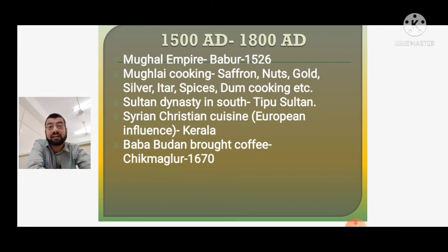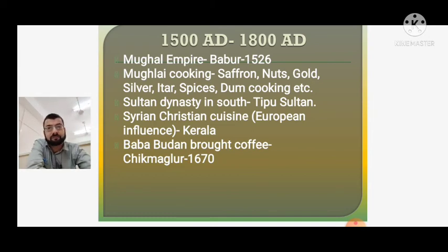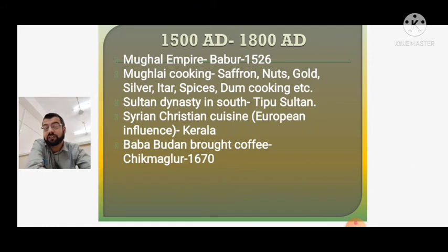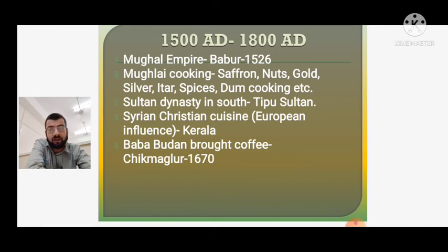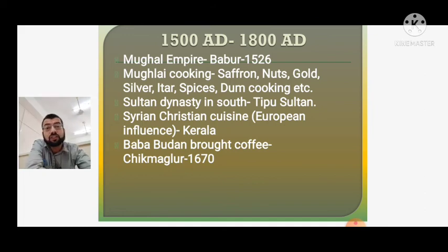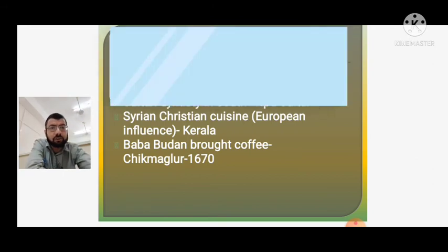At the same time, there was the Sultan dynasty in the southern part of India, whose most famous ruler was Tipu Sultan. He fought against the Britishers to save his kingdom and used rockets for the first time in warfare. There was also Syrian Christian cuisine — a predominantly European-influenced cuisine in Kerala — which still today is very prominent in southern India. Additionally, Baba Budhan brought coffee to Chikmagalur in 1670.